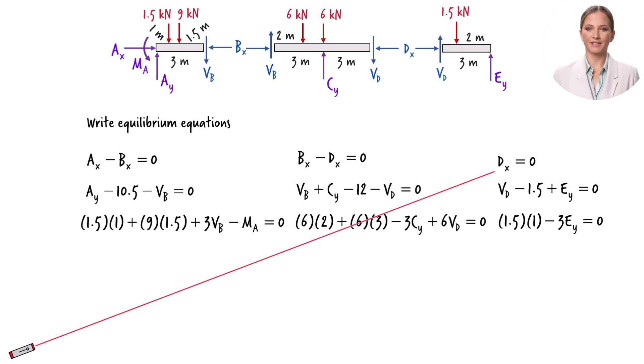This equation states that Dx equals zero. If we substitute zero for Dx in this equation, we get Bx equals zero. And this equation tells us that Ax is also zero.